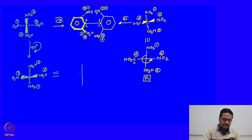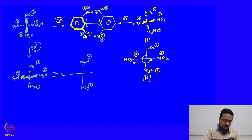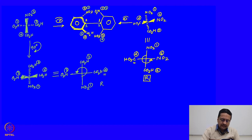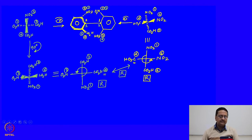We can draw the Fischer projection of this molecule just as before: NO2 and CO2H with positions 1 and 2; O2N and CO2H as 3 and 4. Going from 1 to 2 to 3 is anticlockwise, so this looks like S, but the fourth group is in the horizontal line, so the configuration is R. No matter from which side we look at these molecules, we end up getting the same absolute configuration R.